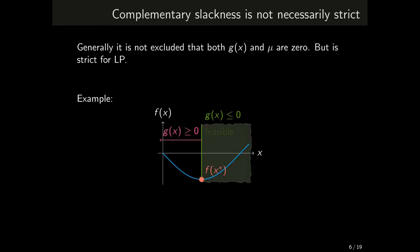Minor technical issue. Complementary slackness condition is not necessarily strict. This is oftentimes not explicitly emphasized. The situation with both g of x and mu vanishing is generally not excluded. An exception is linear optimization for which complementary sensitivity is strict. Have a look at this scenario. Since the candidate point is on the boundary, g of x is zero. Since the candidate point is also a stationary point of the unconstrained optimization, derivative of f vanishes too. However, the derivative of g is not zero. Perhaps you can also see why strict complementarity would occur if the function f was linear.